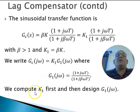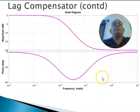Just as in the case of a lead compensator, we compute K1 first to satisfy the steady state requirement and then go and design the dynamic part.